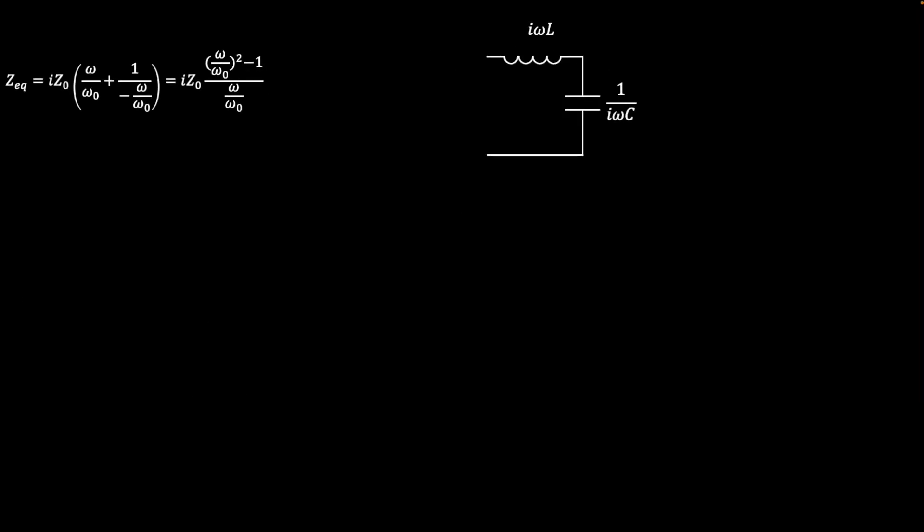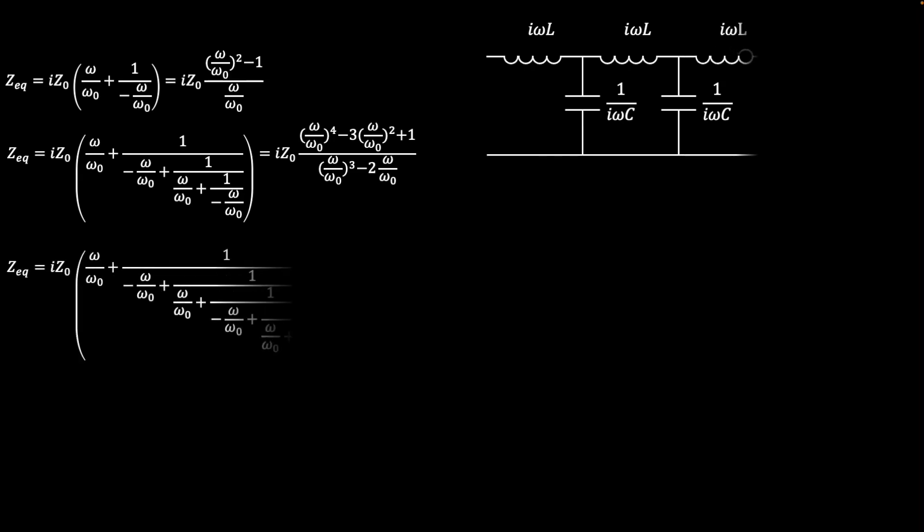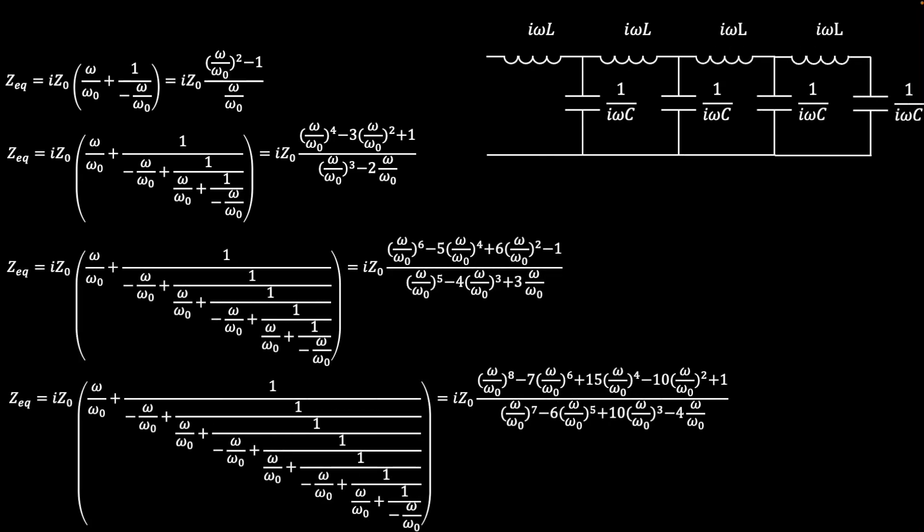Now is a good time to look at how these fractions evolve as each branch of the ladder is added. Using the current example with just one branch in the ladder, the total impedance gives a fraction of polynomials with frequency as the variable. A ladder with two branches gives another complicated fraction of polynomials, and adding more branches gives longer and longer polynomials with seemingly random coefficients. But these coefficients are not random.